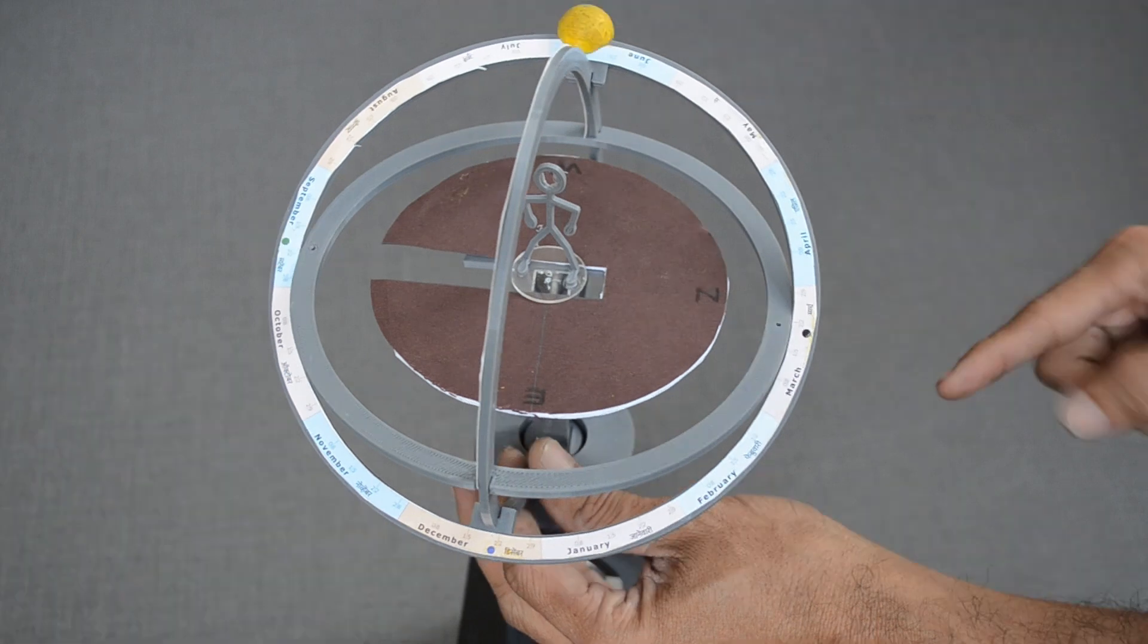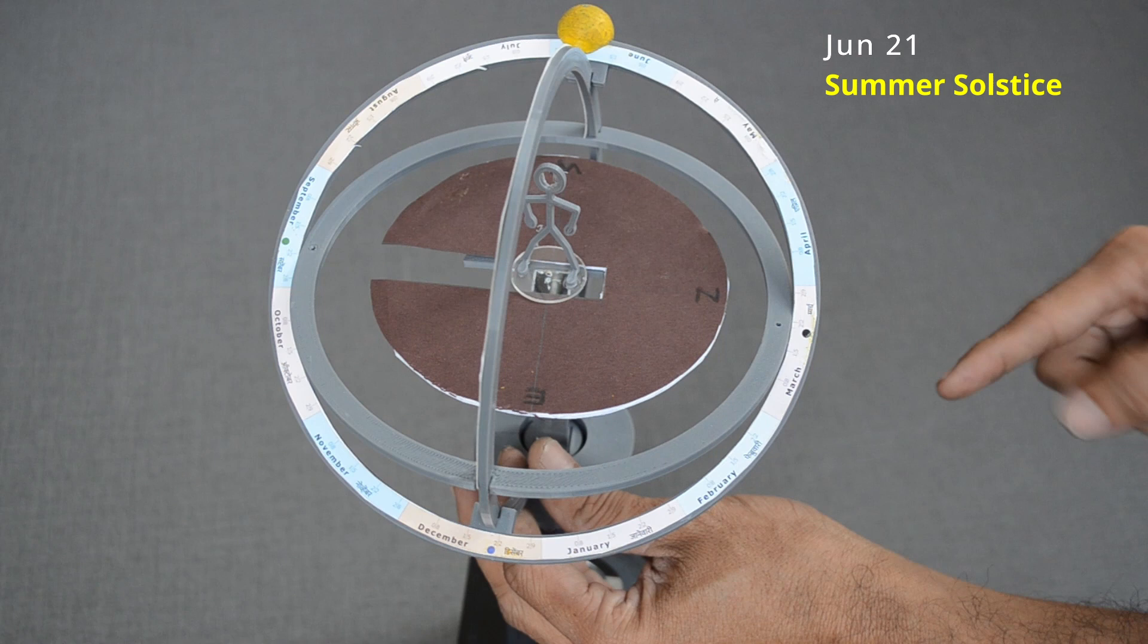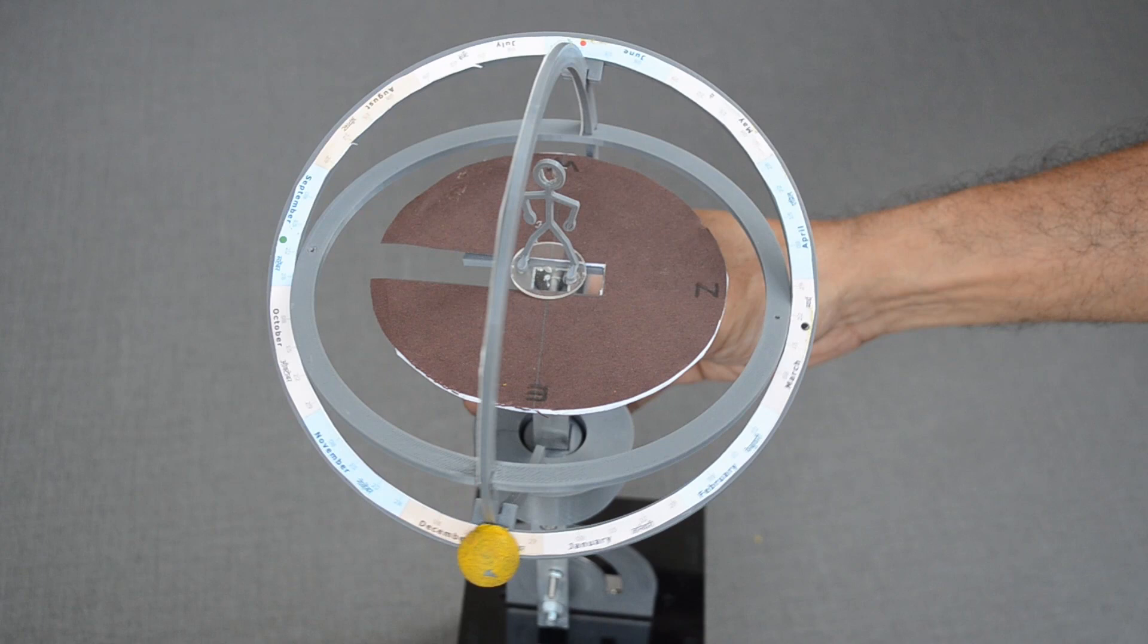Maximum elevation of the ecliptic above the equator is the point of summer solstice. Longest day of the year is June 21st. This point is winter solstice, December 22nd.